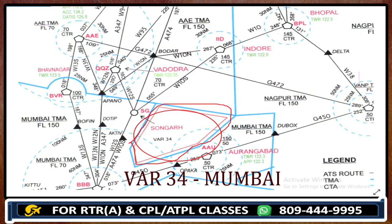So remember — this is restricted area of Mumbai, number 34. This is VAR34. This is how we would identify and come to know about restricted areas, danger areas, and prohibited areas in charts.